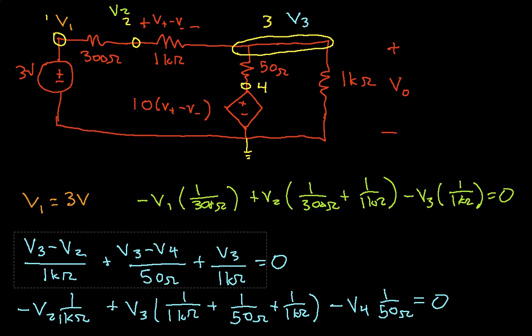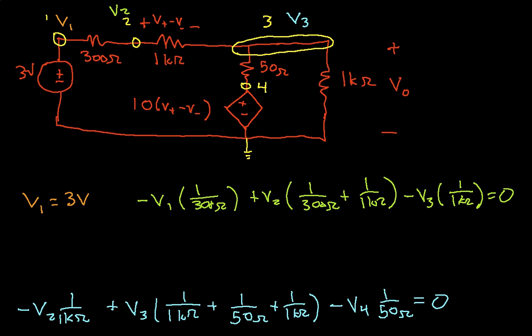I'll clean up just a little bit. At node 4, you'll notice, it is connected to this controlled source. So V4 will be equal to 10 times V plus minus V minus. But we know that V plus minus V minus, that is, this voltage across this 1k ohm resistor, is equal to V2 minus V3. So we have V4 is 10 times V2 minus V3. So now we have four equations and four unknowns. Once we solve these, we should be able to tell what the output voltage Vout is, which turns out to be the same as V3.